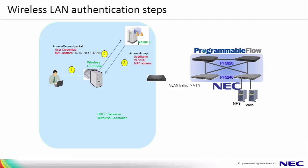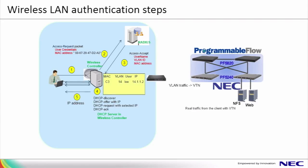In step 3, the RADIUS server sends an access accept message, assuming the user credentials are accepted, with the appropriate VLAN ID for their user connected to the wireless network. In steps 4 and 5, the user requests and receives an IP address from the wireless LAN controller, which is acting as the DHCP server. In step 6, the user may now send traffic, which is forwarded through the wireless network, the traditional network switch, and up to the OpenFlow slash ProgrammableFlow network. Using the VLAN mapping technique, the user is admitted into the appropriate virtual tenant network.